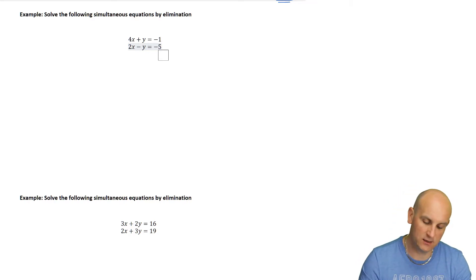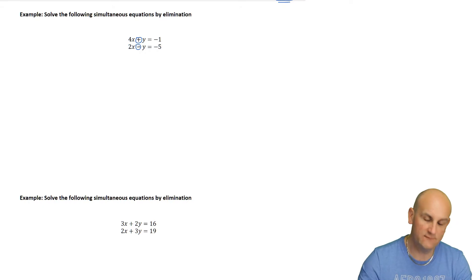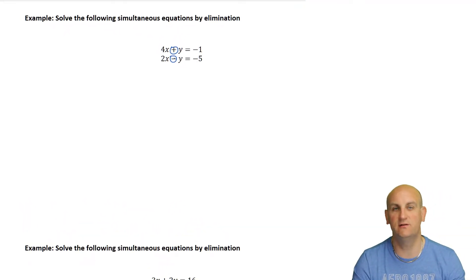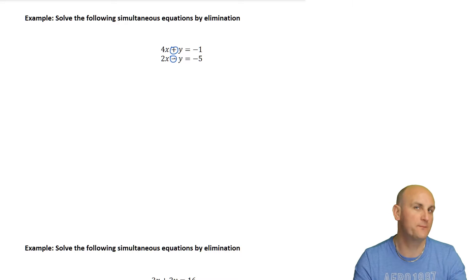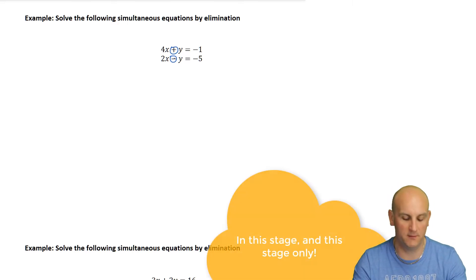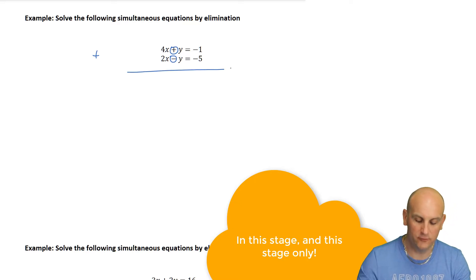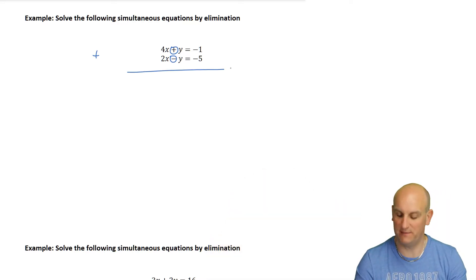Because the coefficient is 1 for both y terms, I look at the signs: positive and negative. A positive and a negative would normally give a negative, so I do the opposite and add them together. I draw a line - because Mr. White told me to, Pavlov's dog.